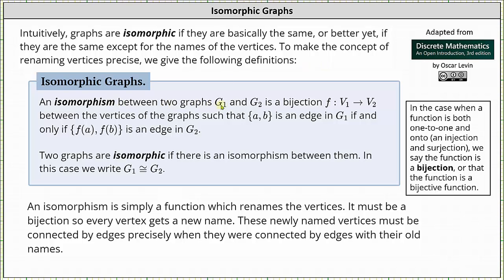An isomorphism between two graphs G1 and G2 is a bijection F which maps V1 to V2 between the vertices of the graphs such that AB is an edge in G1 if and only if F of A, F of B is an edge in G2. Remember, a bijection is a function that is both one-to-one and onto.